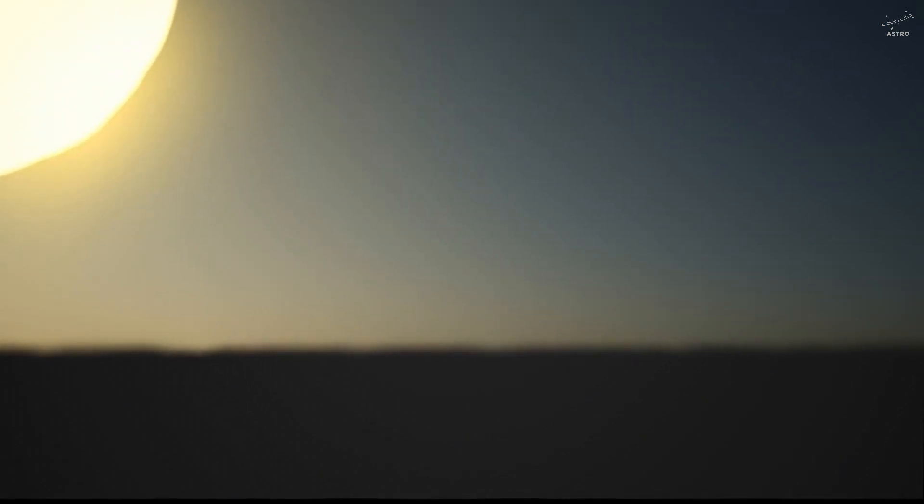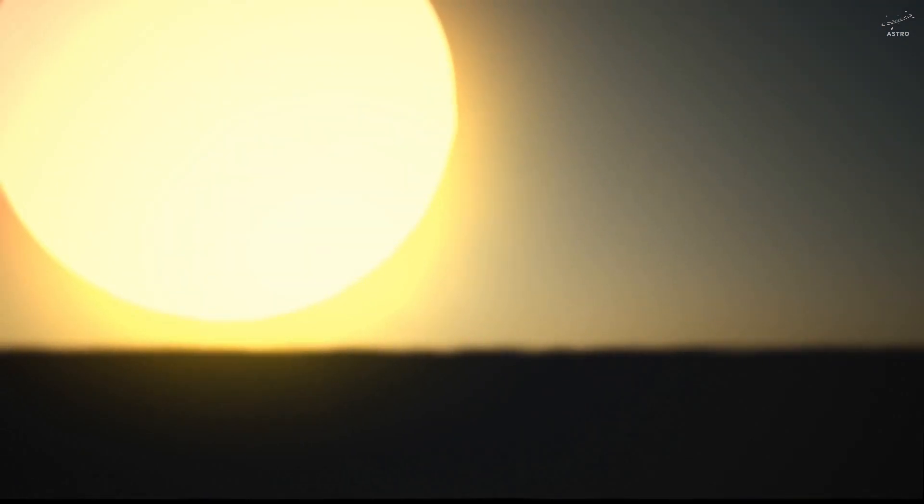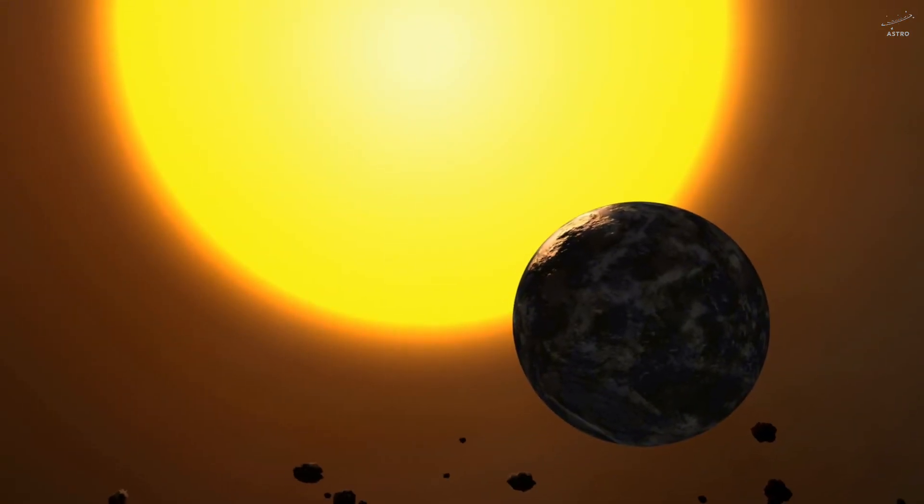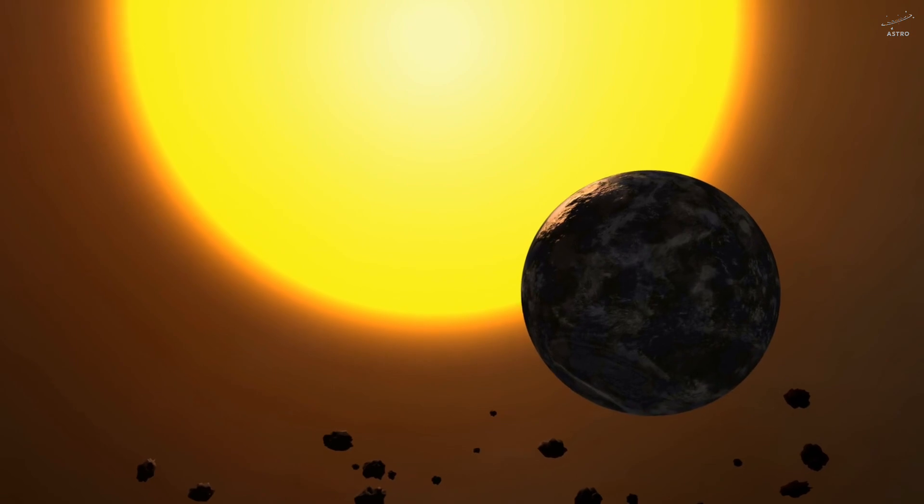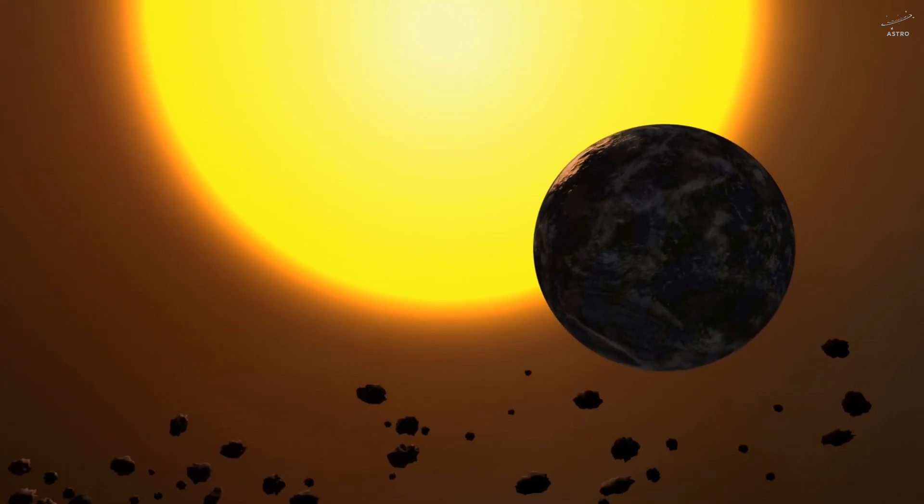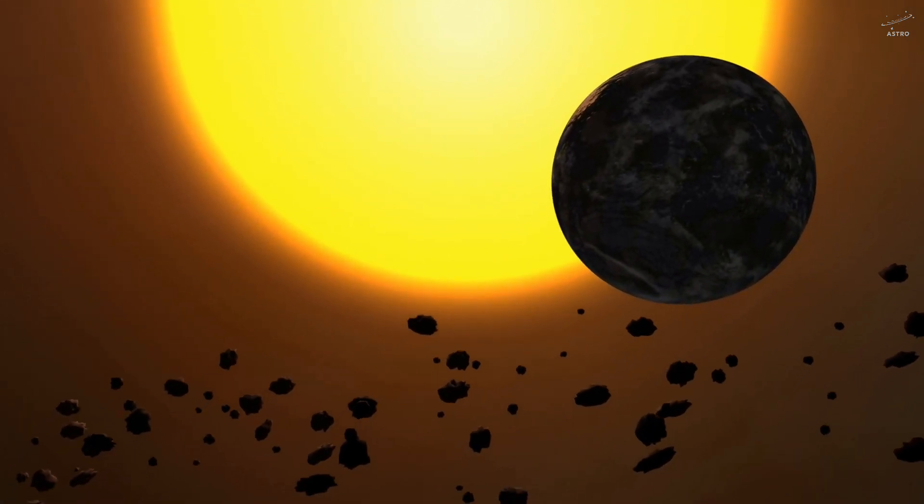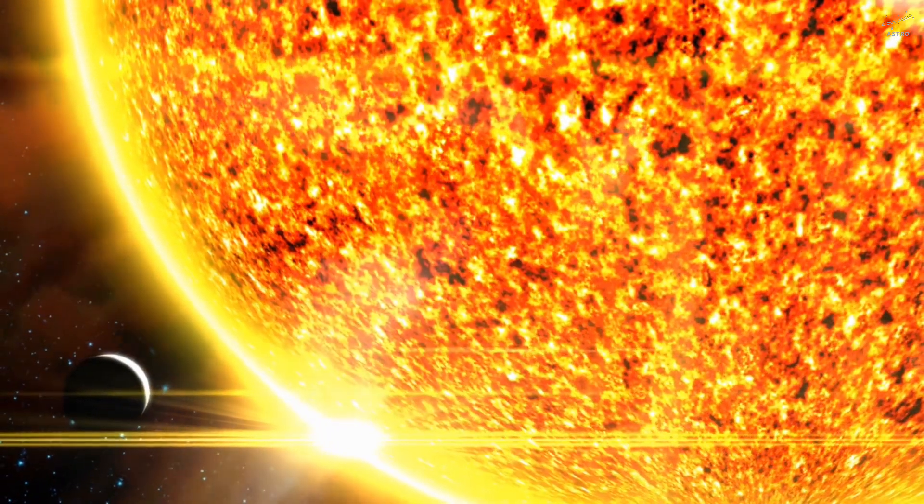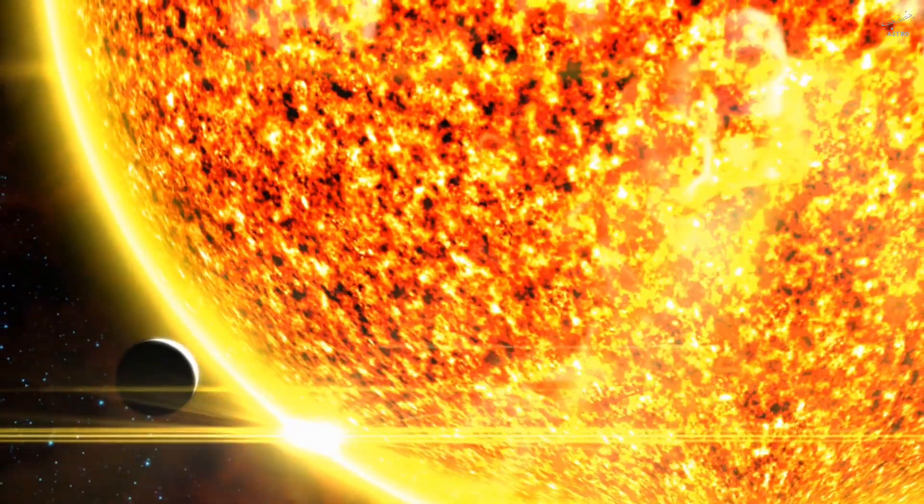Because here's what's unexpected. The outer layers of the sun, for all their light, are surprisingly thin. They're made of plasma, but that plasma is less dense than even the highest layers of Earth's atmosphere. So when Mercury enters the sun, it doesn't crash into a wall of heat. It slips inside, like a stone sinking into a glowing ocean.